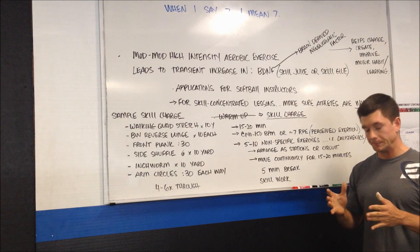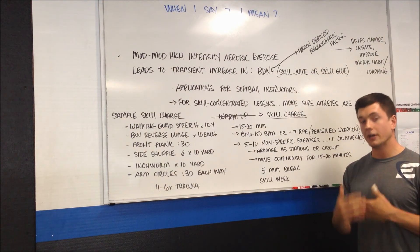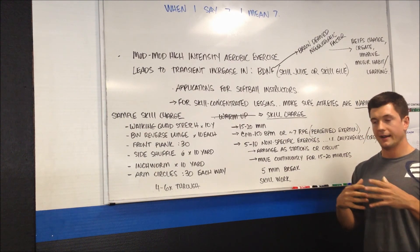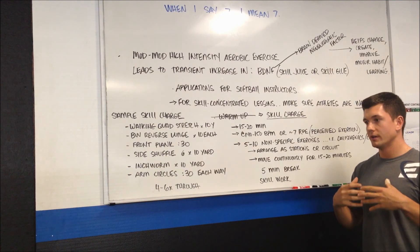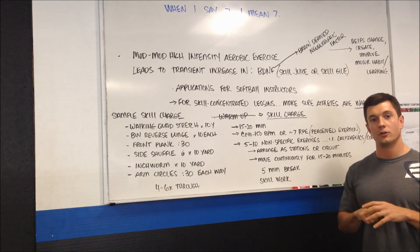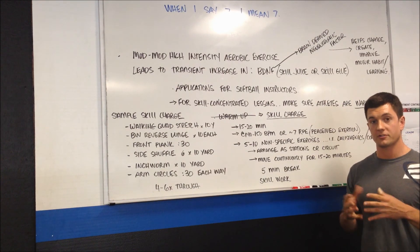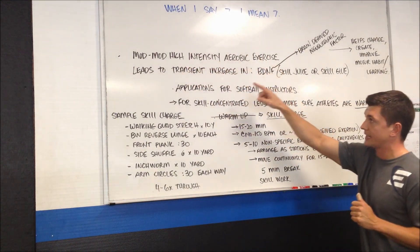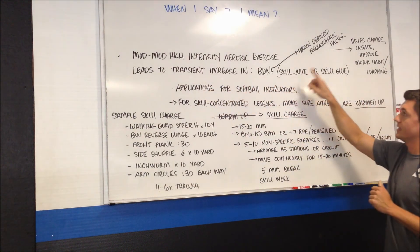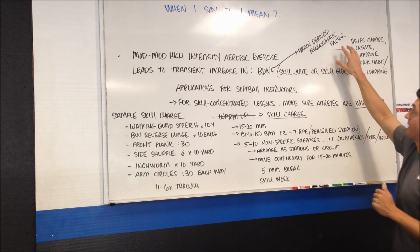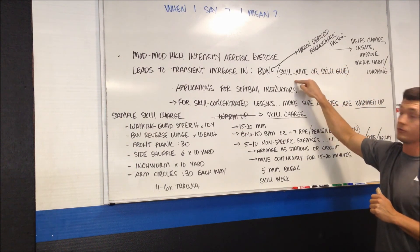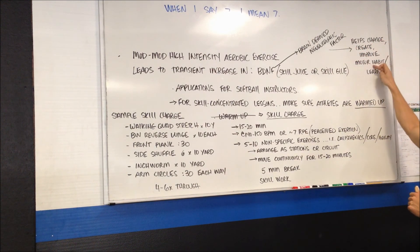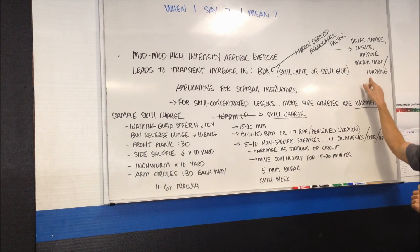For the most part, you need to know that through exercise, we can increase the levels of circulating substances in our body that open us up to learning new movement skills and motor habits. Through moderately high-intensity aerobic exercise, we actually get short-term increases in something referred to as brain-derived neurotrophic factor, which is the skill juice. This is what we need in our body circulating, which helps us change, create, improve motor habits and motor learning. This is seriously powerful stuff.